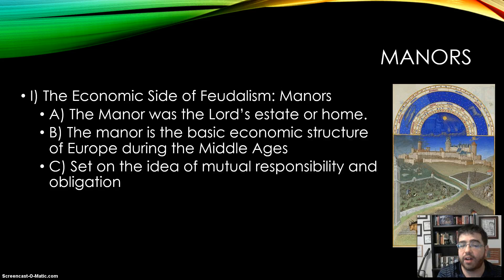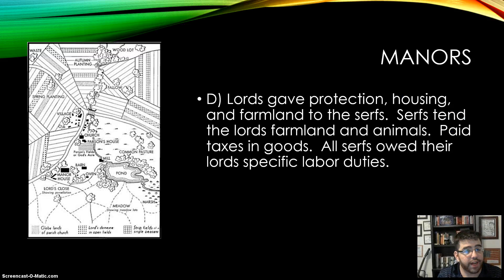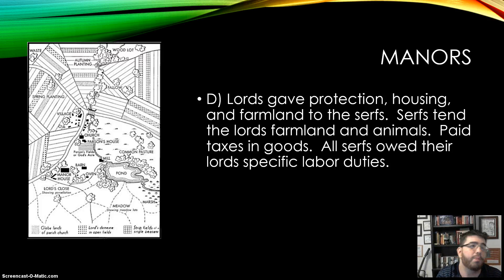This set an idea of mutual responsibility and obligation to each other. Just like the idea of feudalism — where everyone owed someone or were obligated to someone else — the manors were the same way. Certain groups had certain obligations to each other. For example, lords gave protection, housing, and farmlands to the serfs. While the serfs, on the other hand, tended the lord's farmland and animals, and paid taxes and goods. Serfs also owed their lord specific duties — maybe once a week fixing the wall around the manor, or helping build the church bell tower every two weeks.